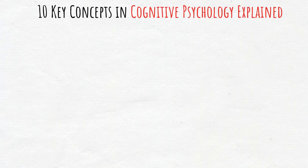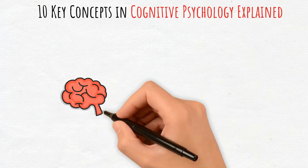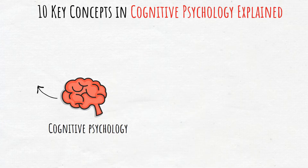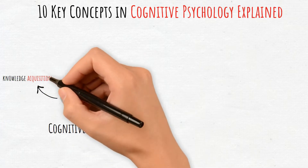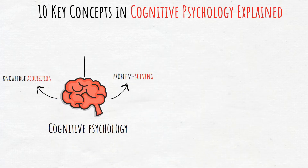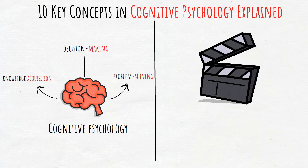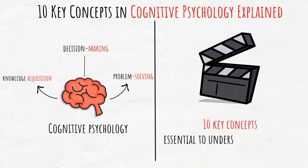10 Key Concepts in Cognitive Psychology Explained. Cognitive psychology explores the mental processes involved in knowledge acquisition, problem-solving, and decision-making. Here are 10 key concepts essential to understanding the field.